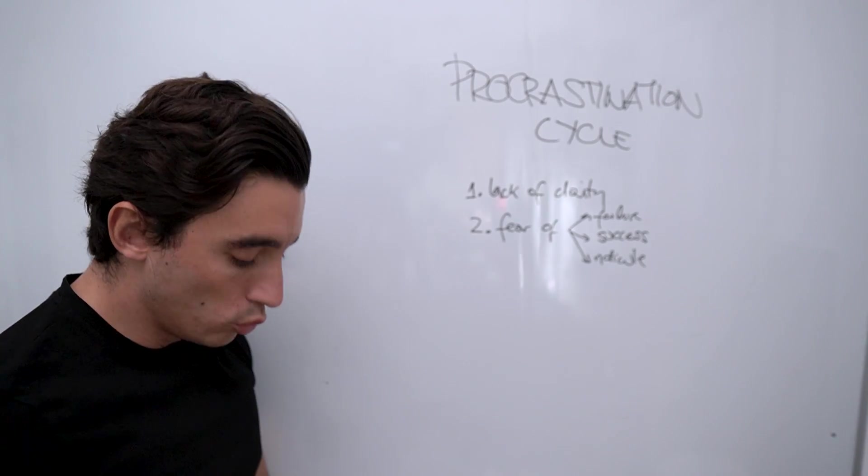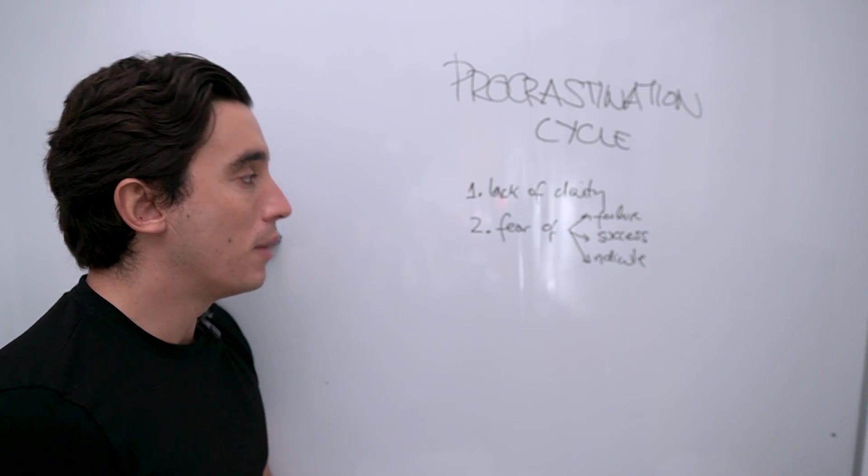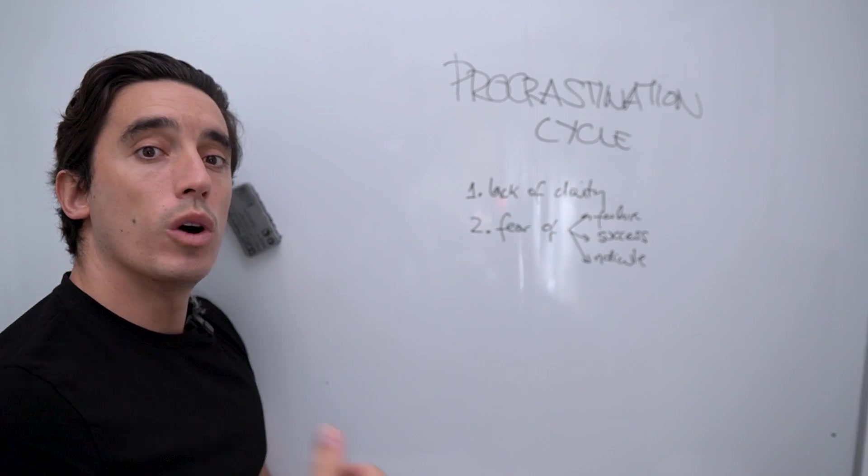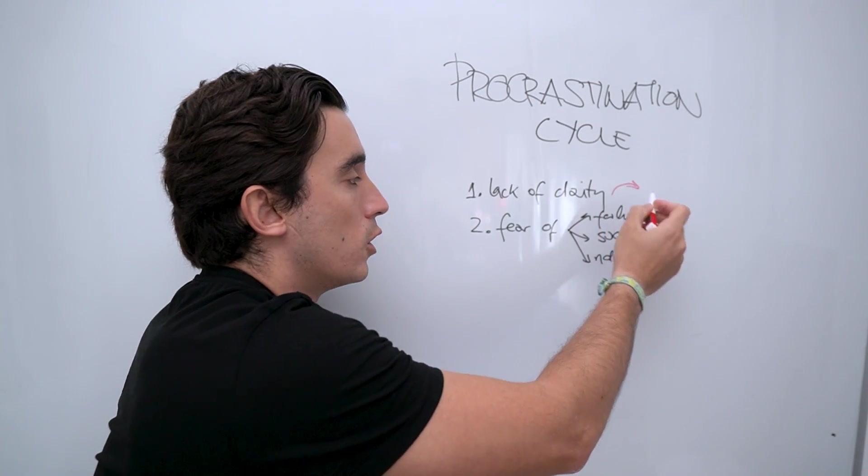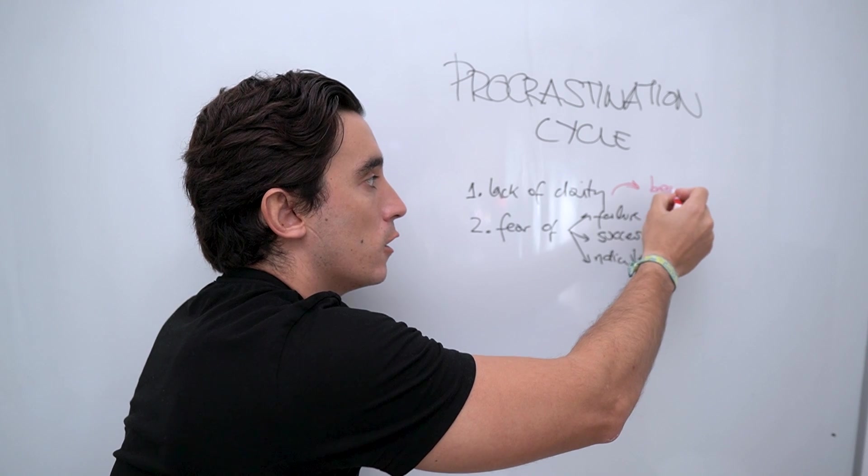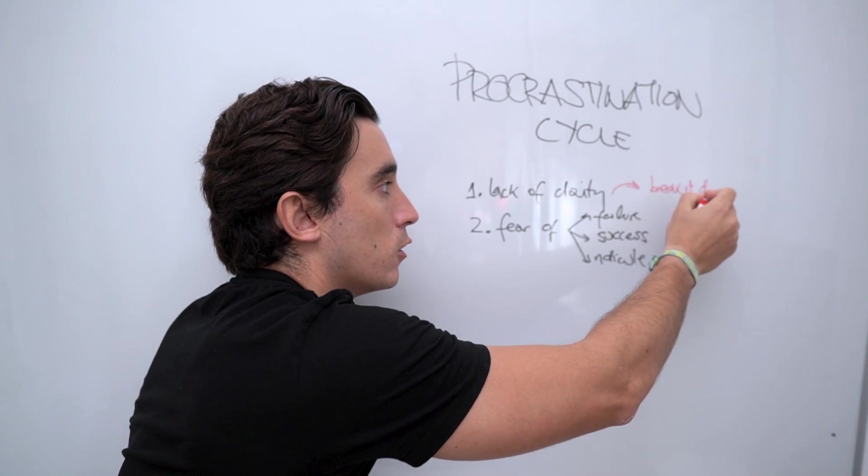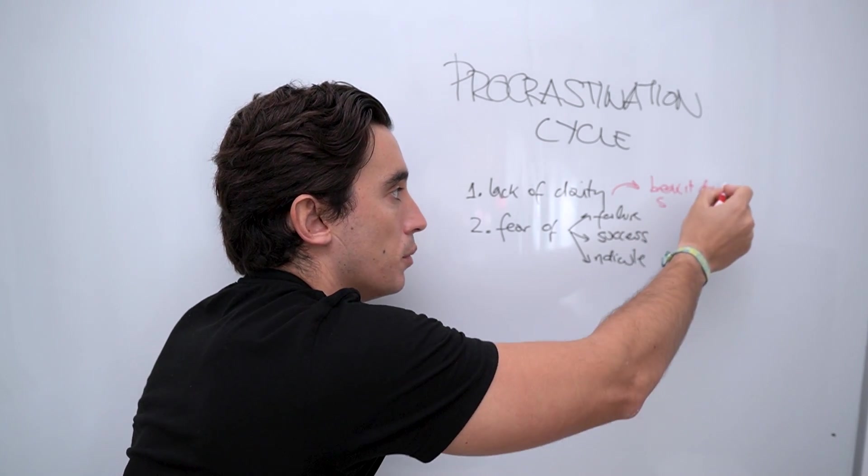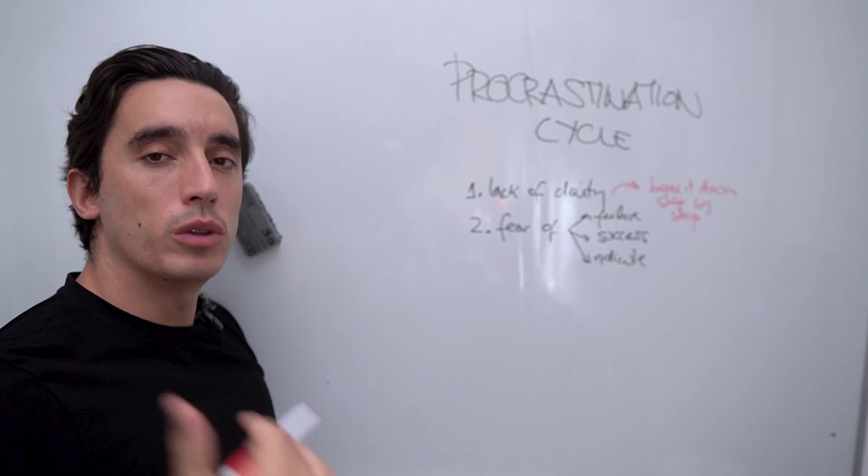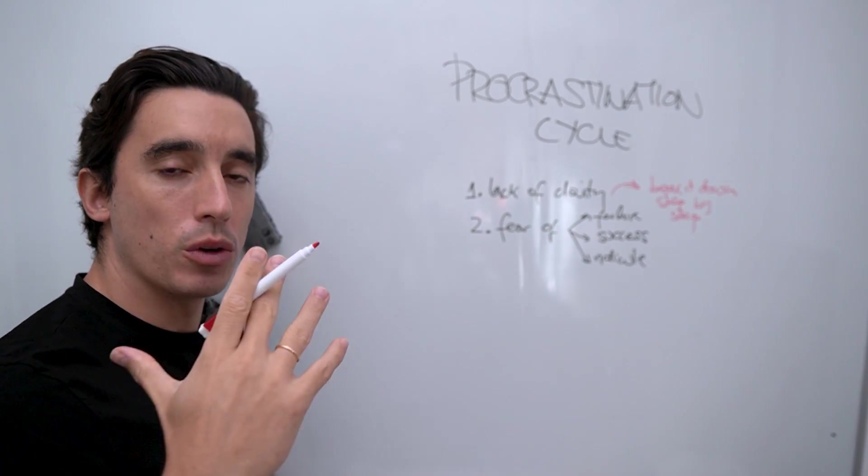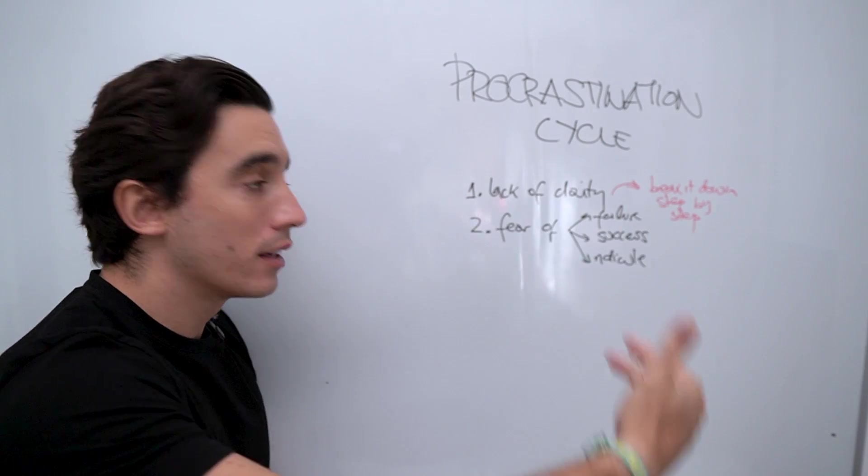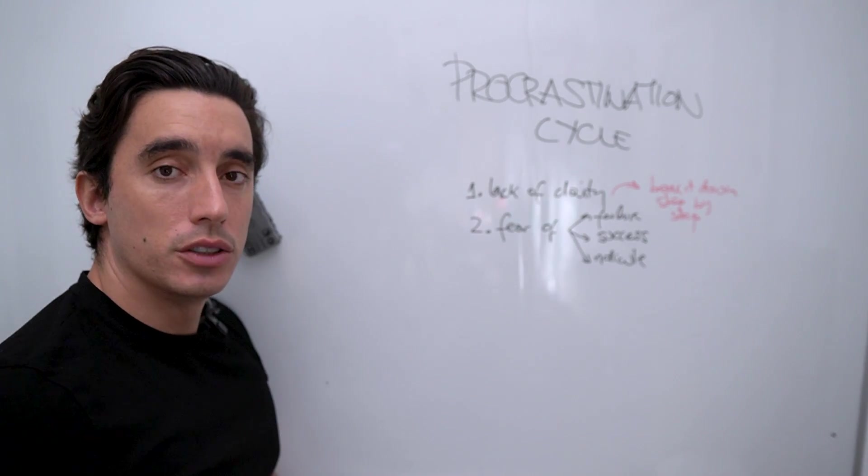So how do we solve procrastination by reversing the equation? If we want to have more clarity on what to do, we break it down. Step by step so that we know exactly what we need to do.